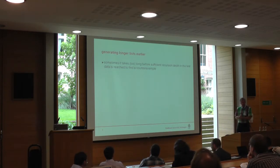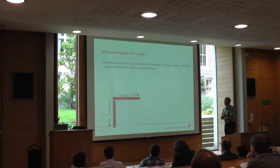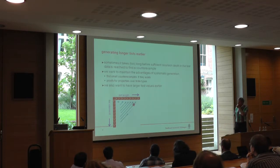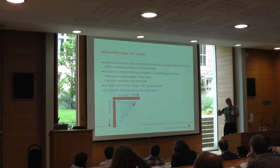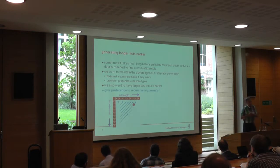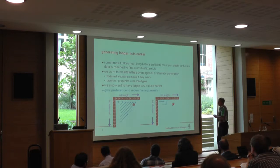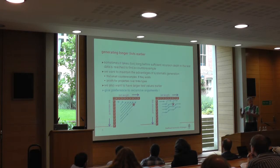The real solution is: I want to do it in a systematic way, but I want to generate long lists earlier. Instead of doing it the old way, I make a combination for cons of an element and recursive lists. And if I give preference to the recursive situation, I get this ordering of lists — I get much larger lists earlier in the test cases.